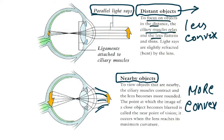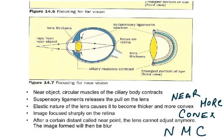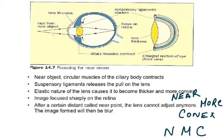To focus on distant objects, the ciliary muscles relax and the lens flattens and becomes thin — light rays are only slightly refracted. When looking at a nearby object, the ciliary muscles contract and the lens becomes more rounded and more convex, achieving maximum curvature so the image is focused on the fovea. Near objects need a more convex lens — easy to remember: near, more convex.